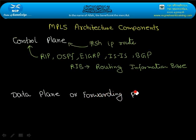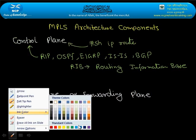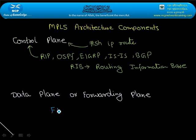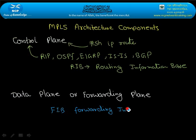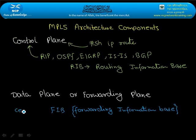The forwarding plane — also called the data plane — uses the FIB, which stands for Forwarding Information Base. When we talk about CEF, by default it is enabled and has two components: first is FIB (Forwarding Information Base), which is Layer 3 information, and second is the Adjacency Table, which is Layer 2 information.